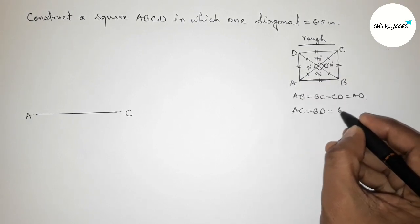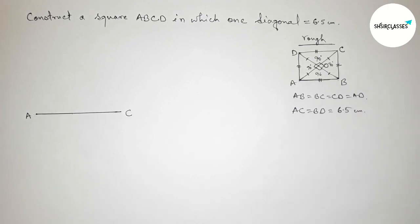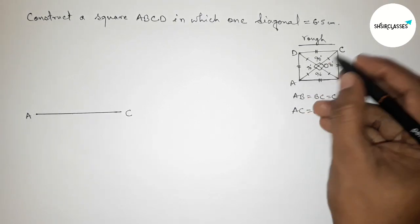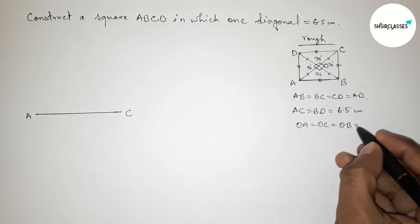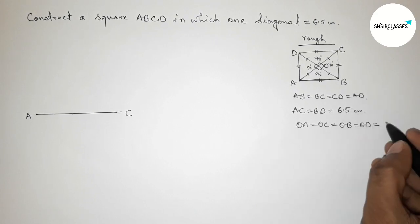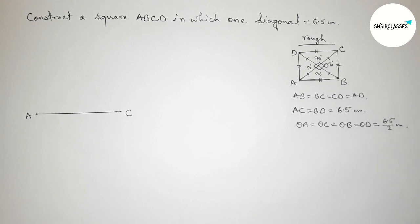So now first write down here: all the sides are equal. And also here the two diagonals AC and BD are equal. So this is six point five centimeter and the length OA equals to OC which is equal with OB and OD.